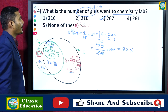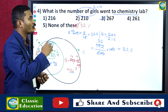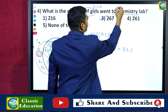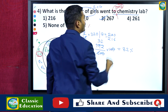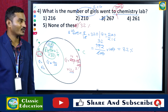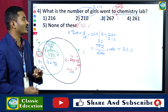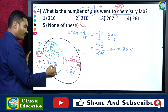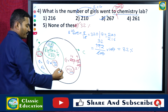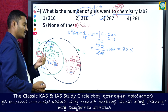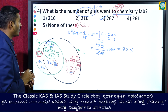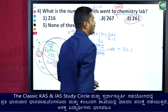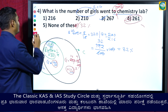Fourth question: what is the number of girls who went to chemistry lab? Note that 'only' is not mentioned here. So we include girls who went to only chemistry lab (126) plus girls who went to both labs (90). That gives 126 + 90 = 216. So 216 is the answer for this question.